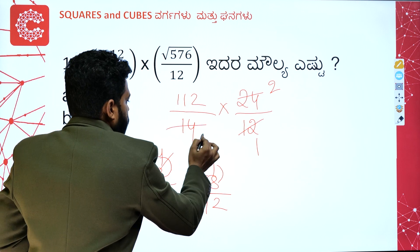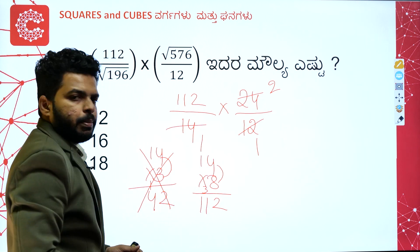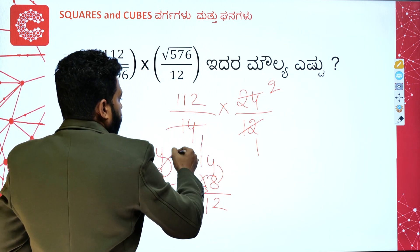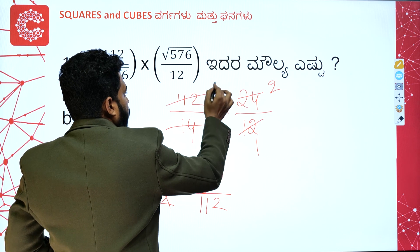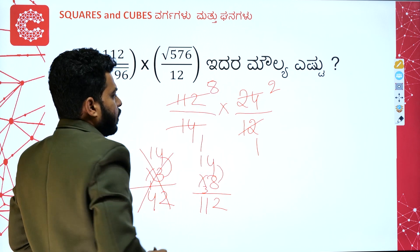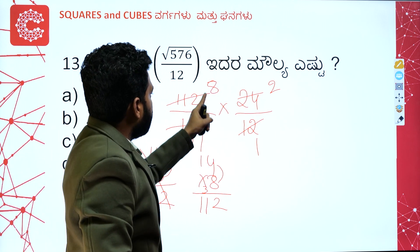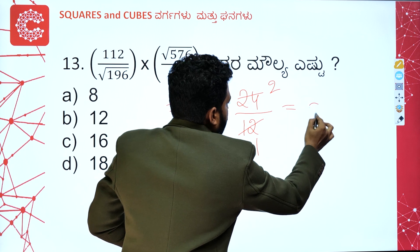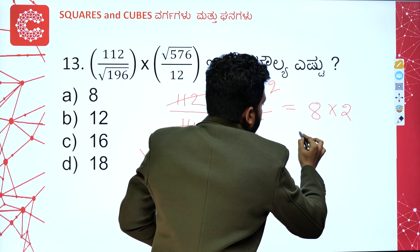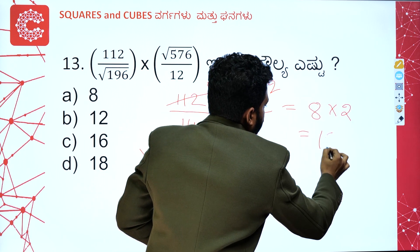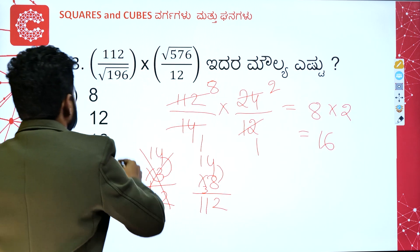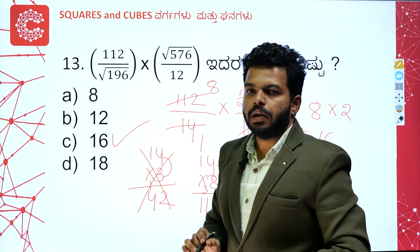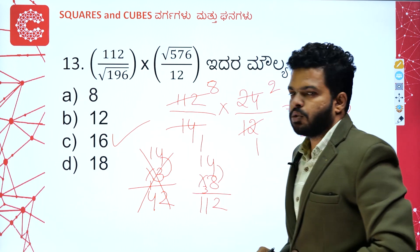So it's 14 eights — cancel, only one remaining. Then 112 divided by 14 into 24 divided by 12 — after cancellation, the answer is Option C. Clear.